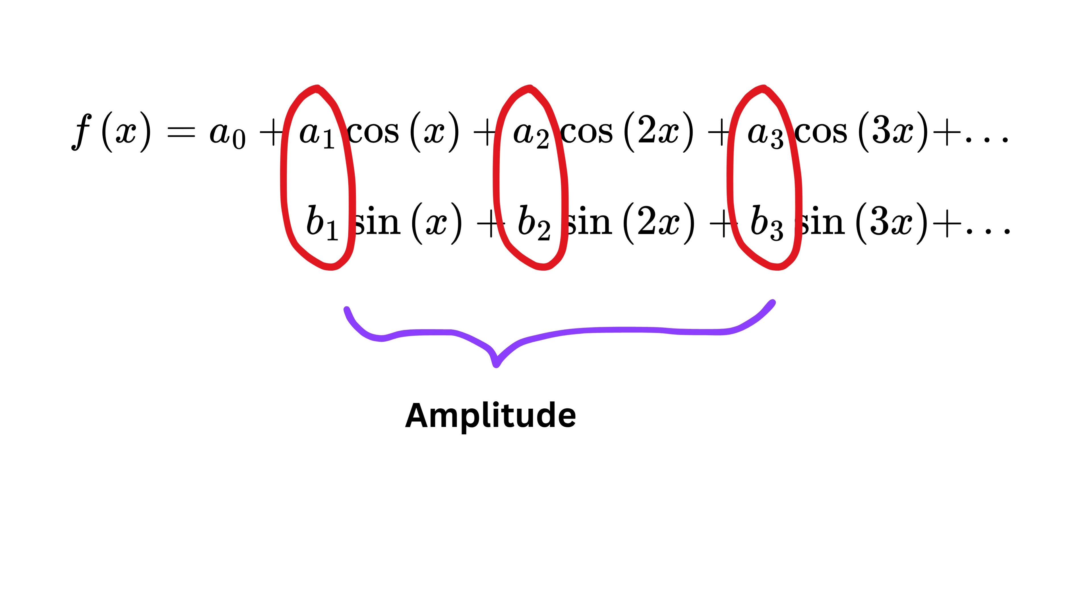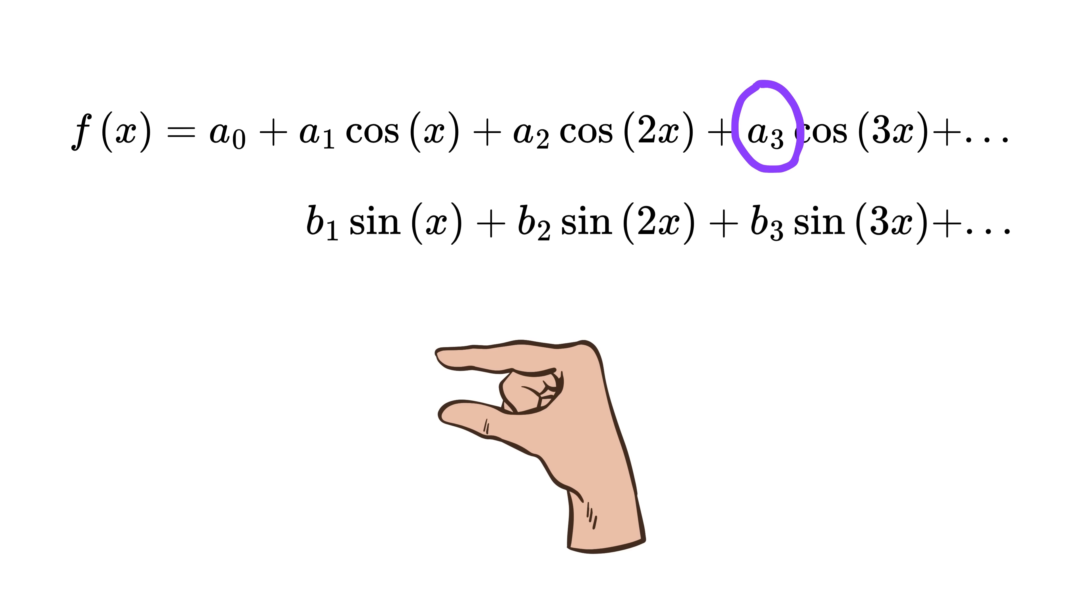Each term represents a harmonic, and the coefficients tell us the amplitude of that harmonic in building the full wave. If the value of a coefficient is small, or the amplitude is small, like if a₃ is very small, then the contribution of cos(3x) in shaping the signal will also be very small, almost negligible. On the other hand, if a coefficient or the amplitude is large, then that particular harmonic will play a strong role in deciding the shape of the final wave. This way, by looking at the coefficients, we can immediately tell which harmonics are important, and which ones hardly affect the signal at all.